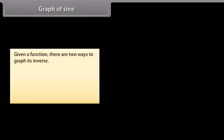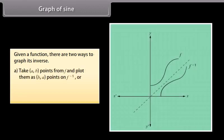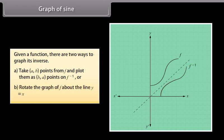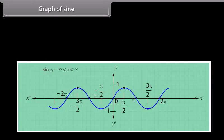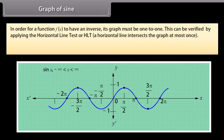Given a function, there are two ways to graph its inverse: first, take (A, B) points from f and plot them as (B, A) points on f⁻¹; or second, rotate the graph of f about the line y = x. We will begin by finding the inverse of the sine function. This is the graph of f(x) = sin x. In order for a function to have an inverse, its graph must be one-to-one, verified by the horizontal line test (HLT). Clearly, the graph of sin x fails this test.